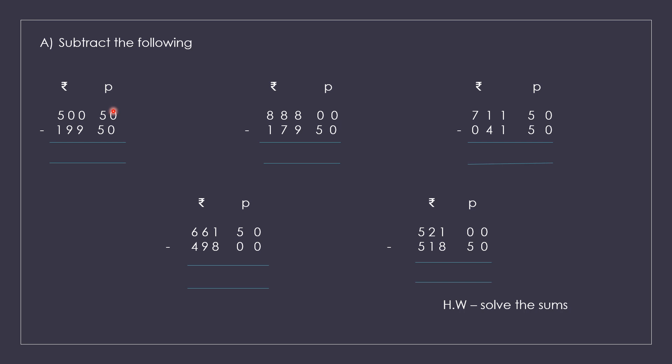Next question: 888 rupees 0 paise minus 179 rupees 50 paise. So subtract children correctly and try to find the answer.